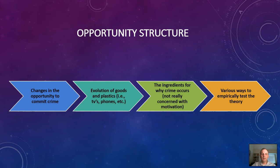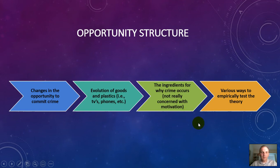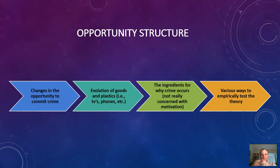These are the factors they discussed — the evolution of plastics, goods, TVs, and telephones. Someone once described this perspective to me as being like baking a cake: you need flour, eggs, sugar, milk, and butter to come together in time and space. Put them in the oven at the right temperature and you'll have a cake. If you forget the eggs, you won't have a cake. Similarly, if there's a lack of suitable targets, there may be no victimization. You can't steal a bike if there's no bike there to be stolen.